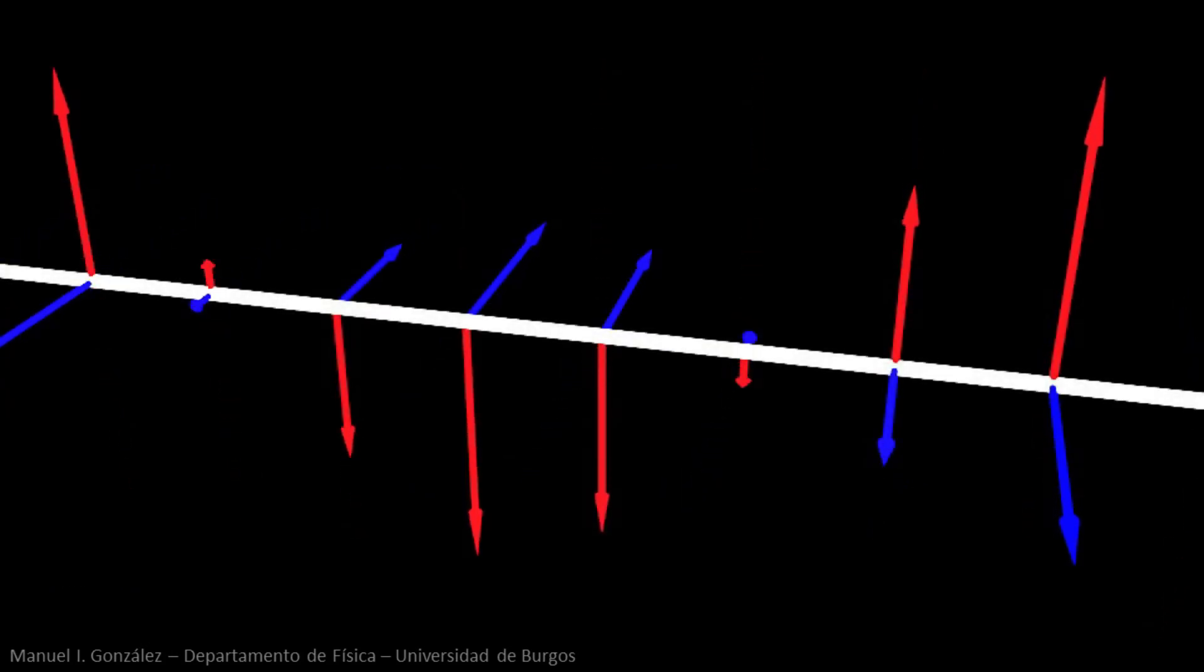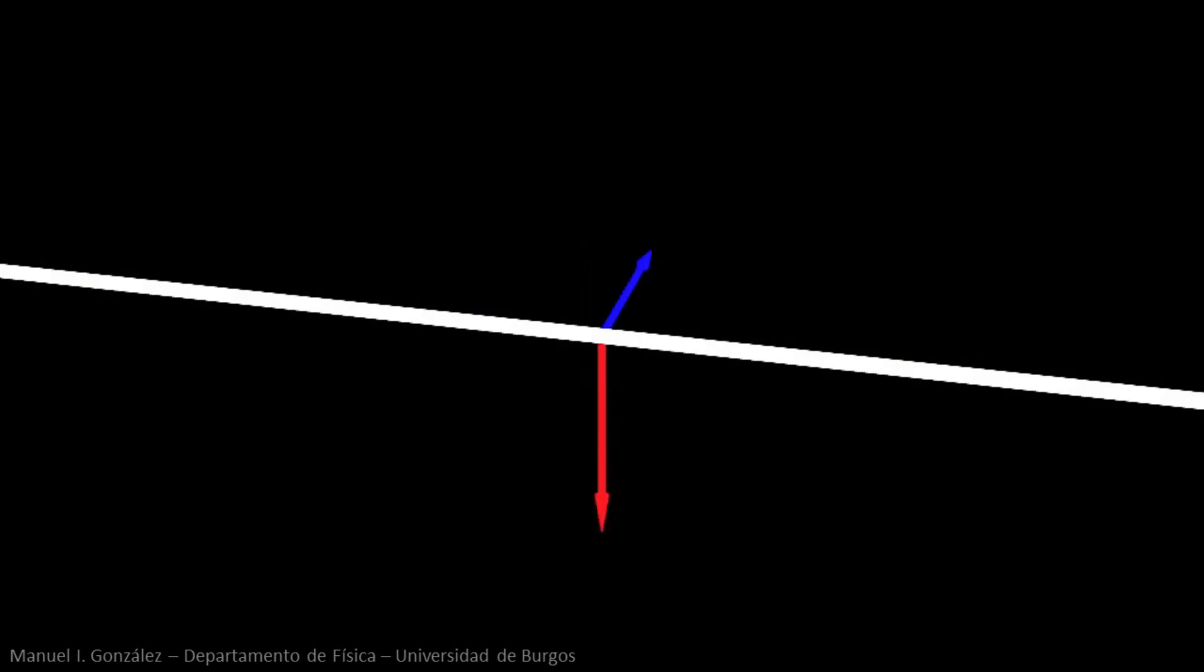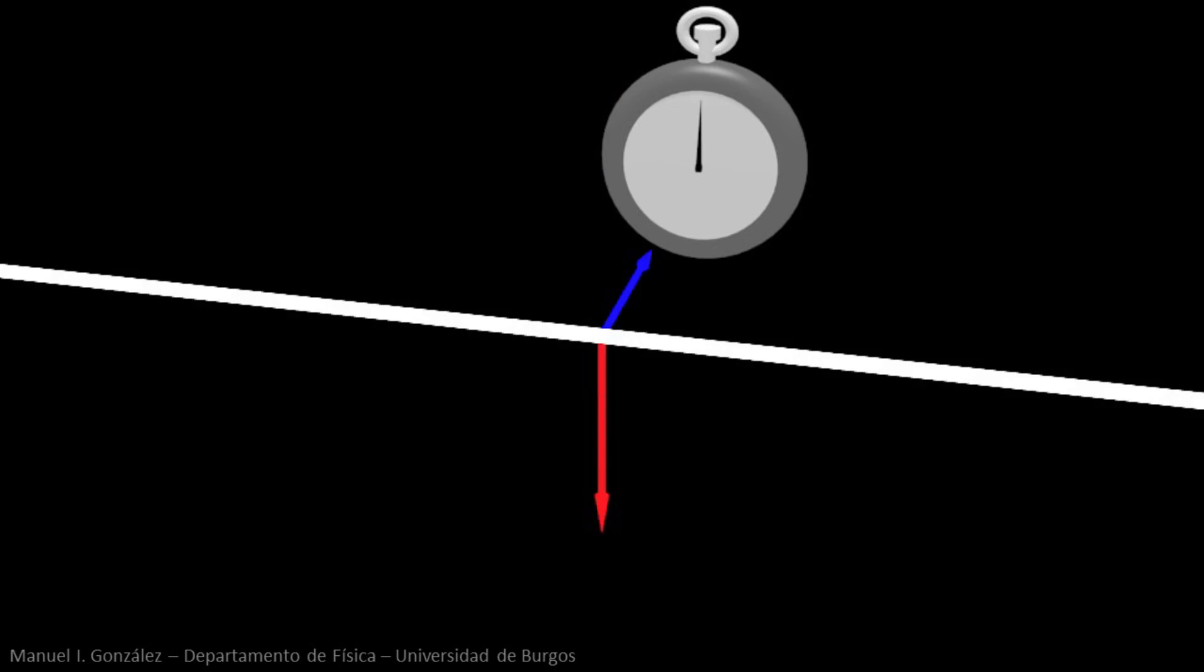Now focus on a specific point of the beam and observe the two fields defined at that point. Let's measure the time it takes for both fields to complete an oscillation. This time interval is the period of the electromagnetic wave.